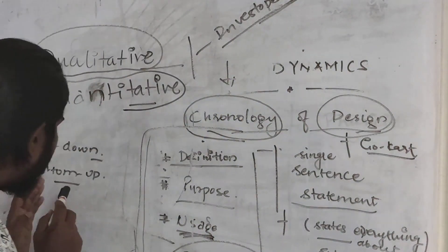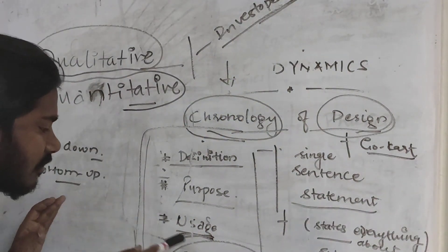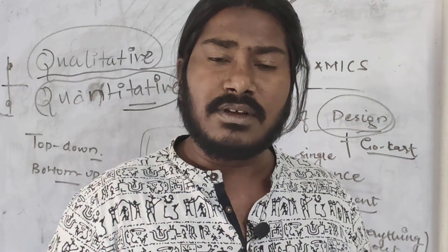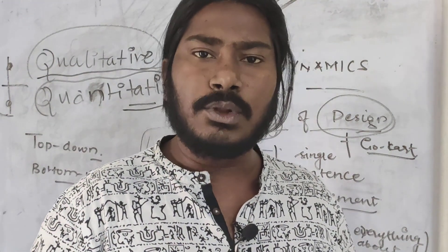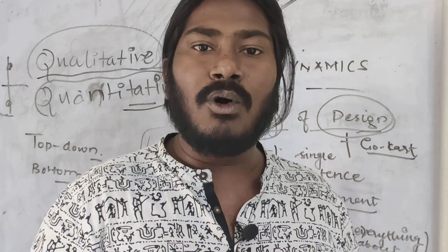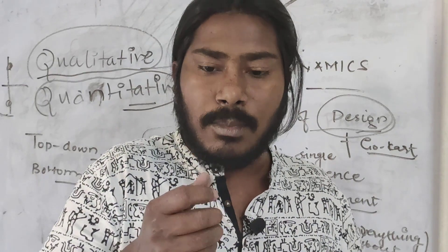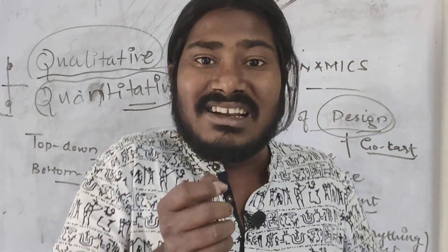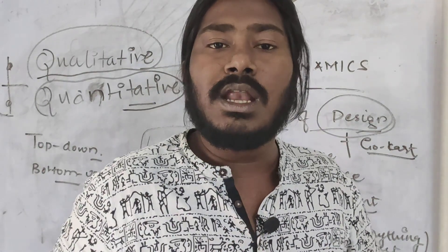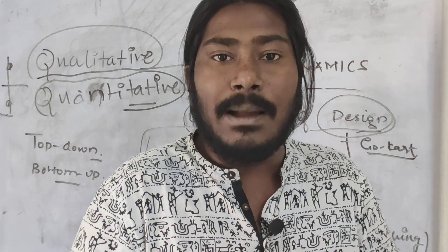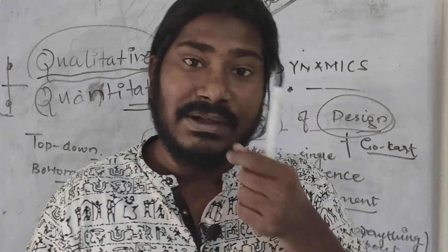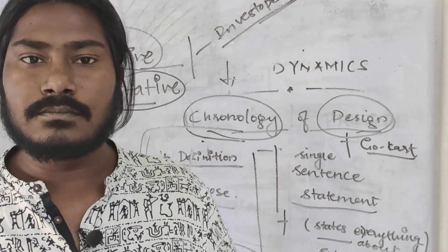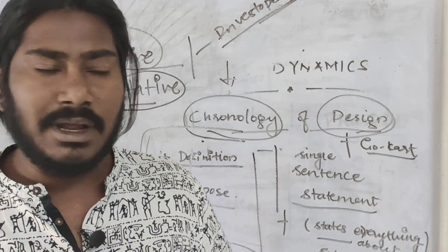While the bottom-up approach says: first figure out the constraints. Figuring out the constraints is not just about the rule book. It's also about your financial condition. It's also about the technological standards of your campus.